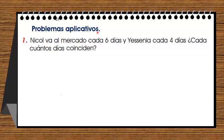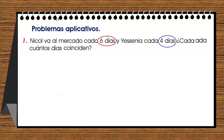Problema aplicativo uno: Nicole va al mercado cada seis días y Yesenia cada cuatro días. ¿Cada cuántos días coinciden? Nicole va al mercado cada seis días y Yesenia cada cuatro días.